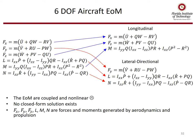In the end, we end up with six degrees of freedom aircraft equations of motion — three translational and three rotational. We can reorder these six equations to form three longitudinal equations and three lateral-directional equations. The longitudinal equations involve the x-force, z-force, and m-moment. The lateral-directional equations have the y-force, l-moment, and n-moment. These equations are coupled and nonlinear, and unfortunately there is no closed-form solution. Fx, Fy, Fz, L, M, and N are forces and moments generated by aerodynamics and propulsion.